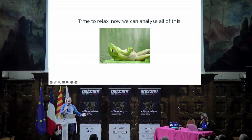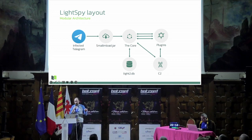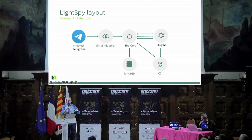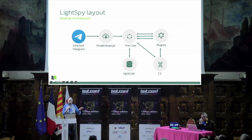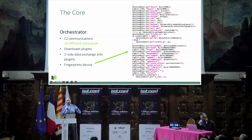Time to relax and do my favorite job: static analysis. As a result, we arrived at this layout. There's a carrier application — it could be Telegram, WeChat, or Baidu. It downloads smallmload.jar, which is a simple downloader. This downloader asks the server for the current version of the core payload and downloads it. The core downloads plugins, communicates with the C2, and creates a database. I'll focus on the core and a few plugins in this talk. The core is the main orchestrator — it communicates with the C2 and exports exfiltration functions for each plugin.